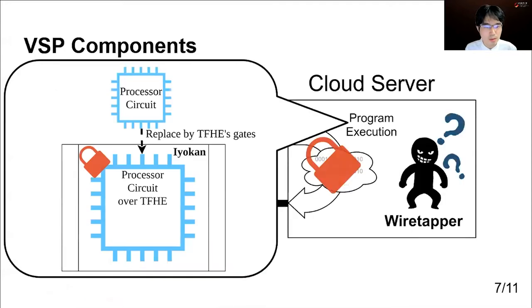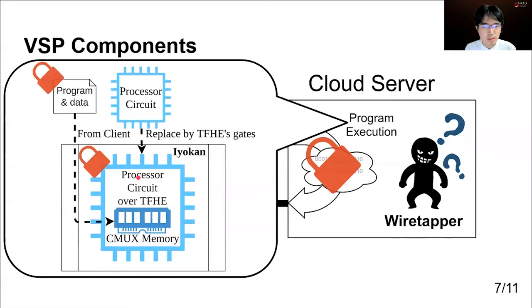Before explaining the details, we explain the brief structure of the components needed to evaluate the processor circuit with the encrypted program to clarify where Iyokan does the work. At first, Iyokan takes the processor circuit and replaces each logic gate in the circuit with TFHE's logic gate to construct the processor for the encrypted program. During the construction, Iyokan also embeds CMUX memory with the encrypted program and data to the processor circuit.